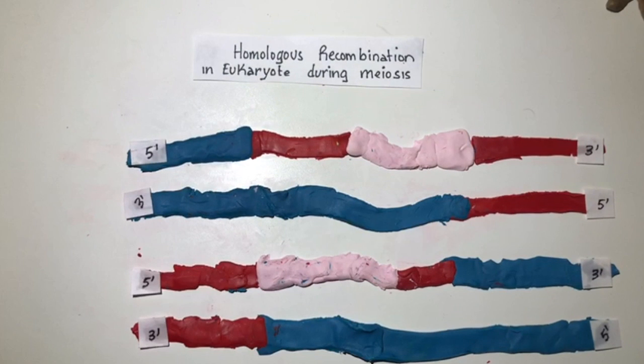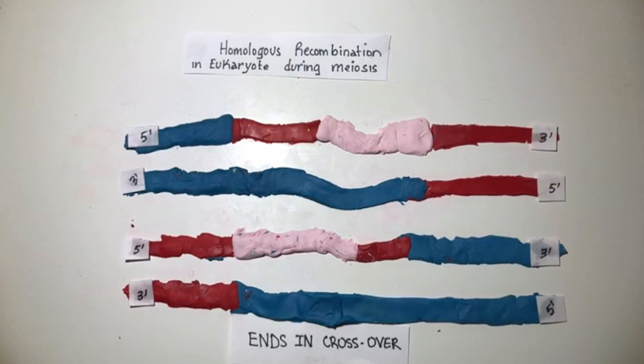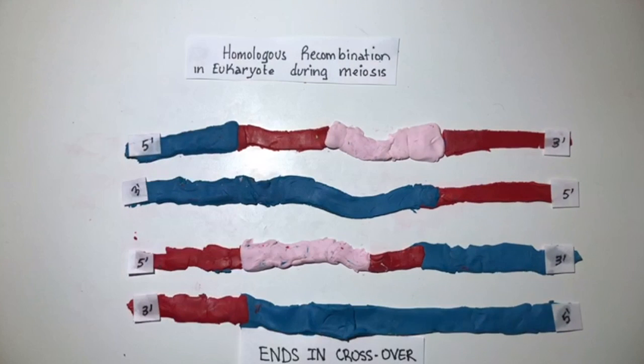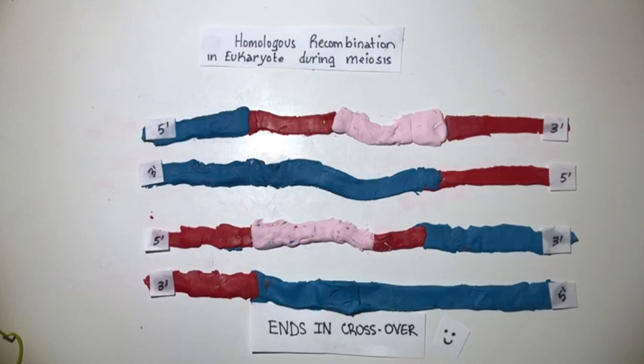Thank you for watching this video. Hope it helps you understand homologous recombination in eukaryotes during meiosis. If you have any questions, please post them below. Thank you for listening.